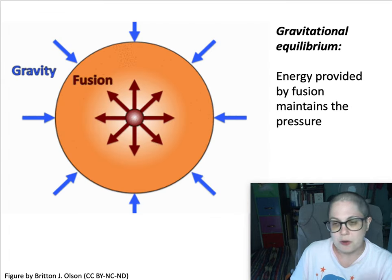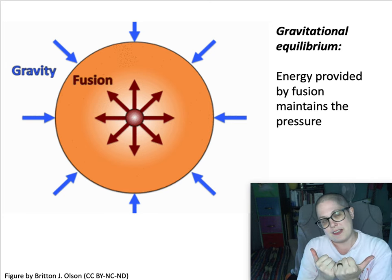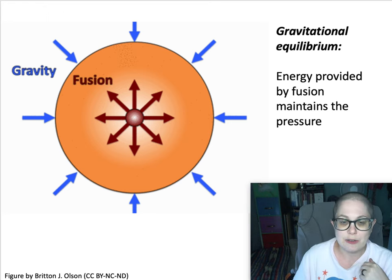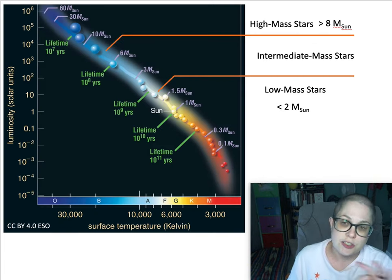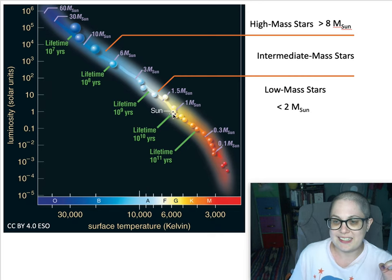Hydrogen is fusing to helium in the core. The star is in gravitational equilibrium. Pressure from the mass above is counteracted by pressure from fusion pushing out, and the star is at a pretty much stable size. This Hertzsprung-Russell diagram just shows us the main sequence — this is that hydrogen-fusing lifetime of the star.